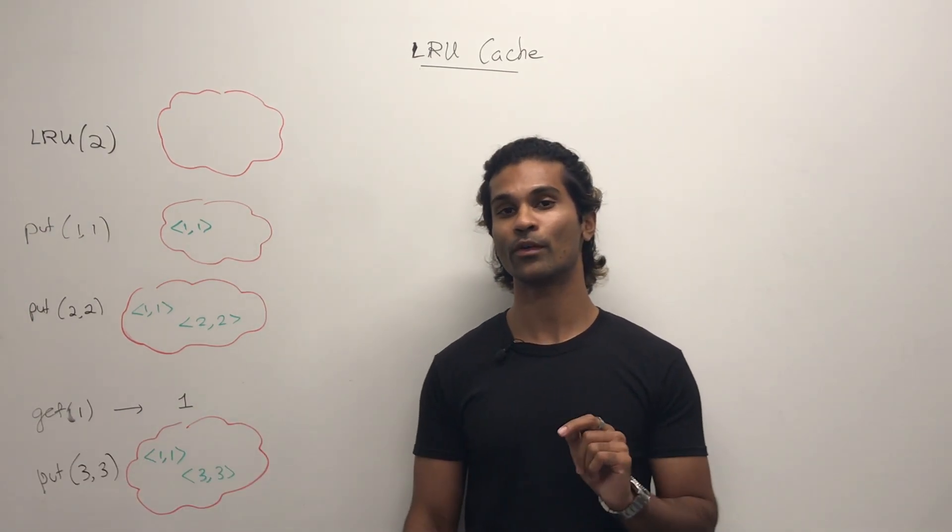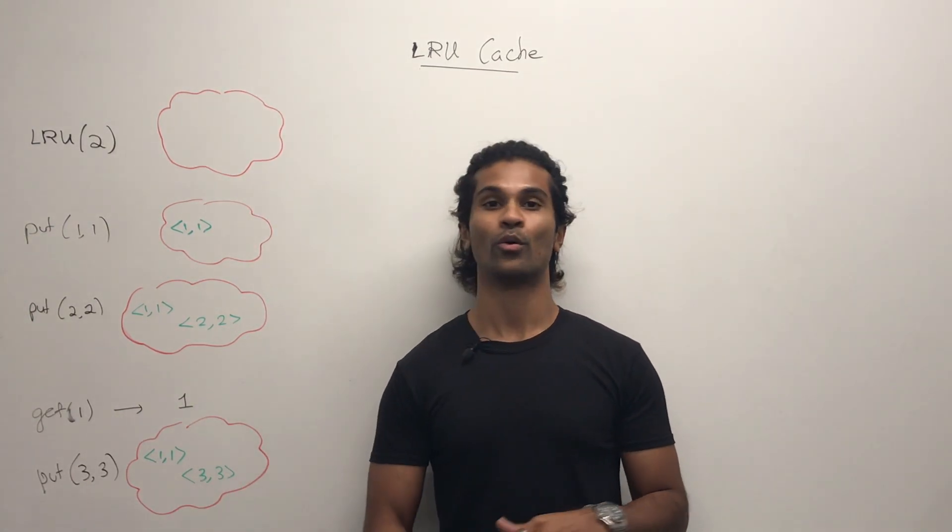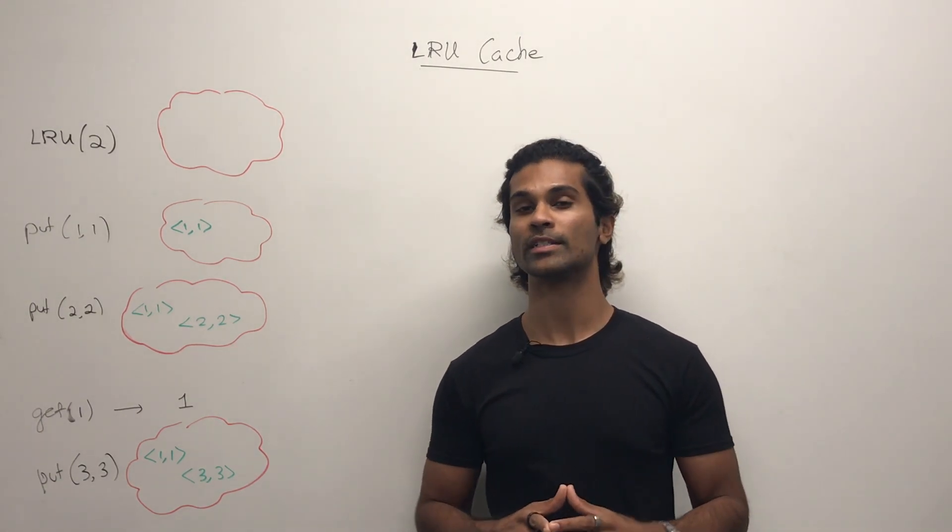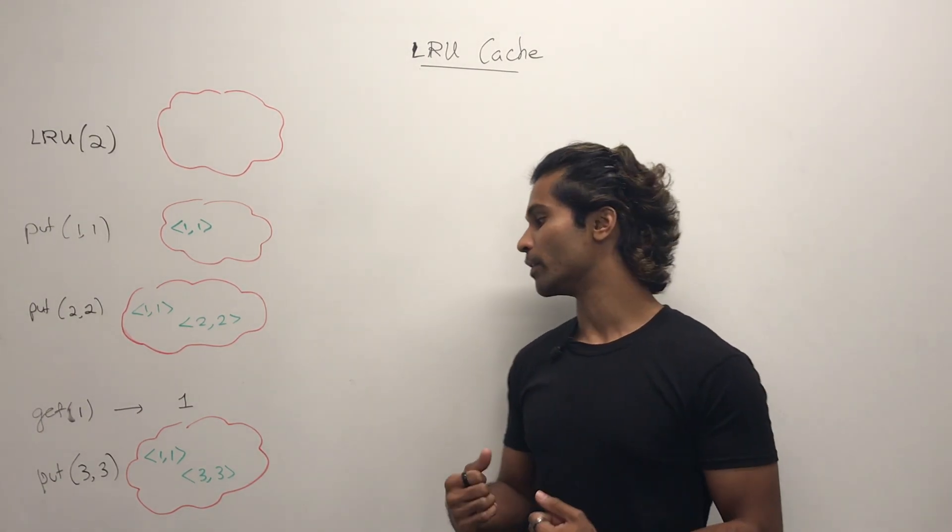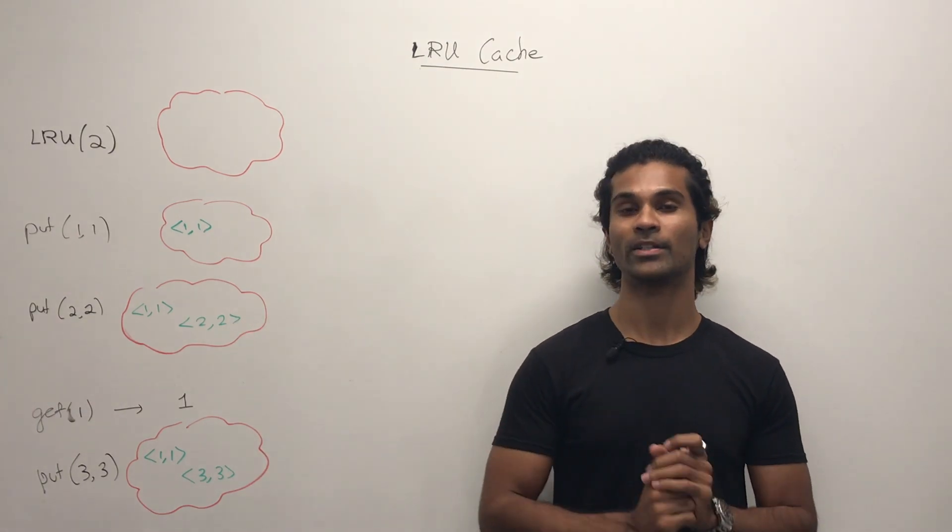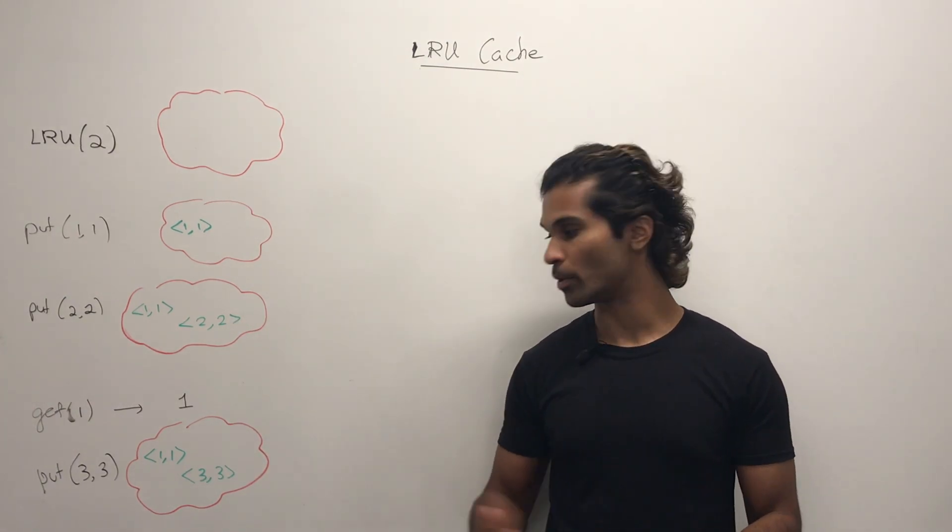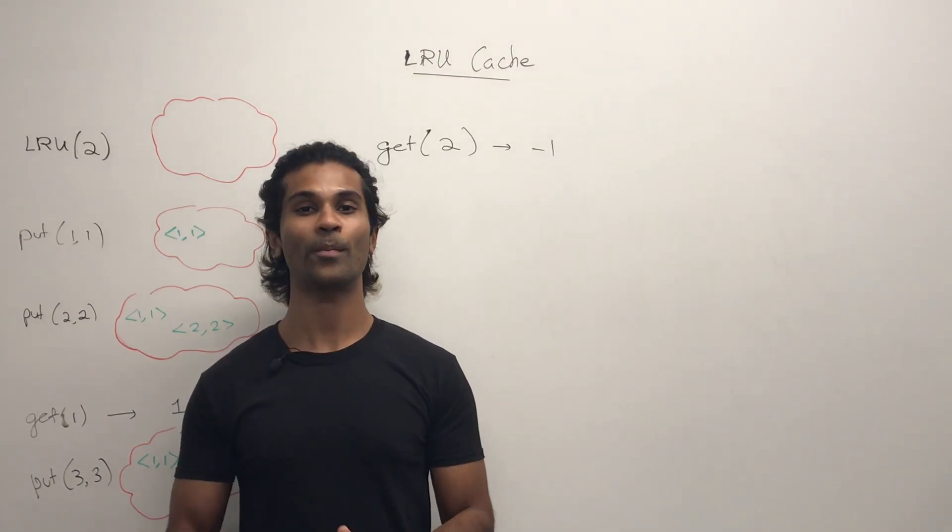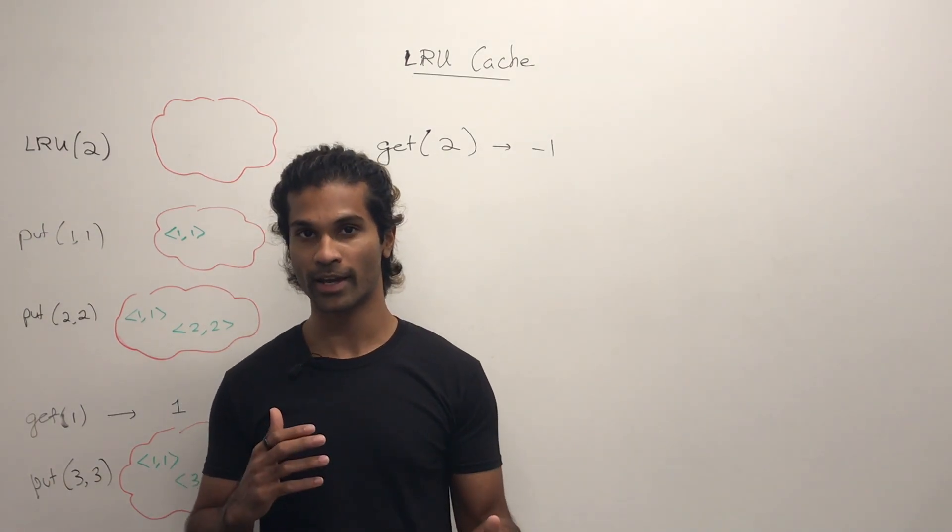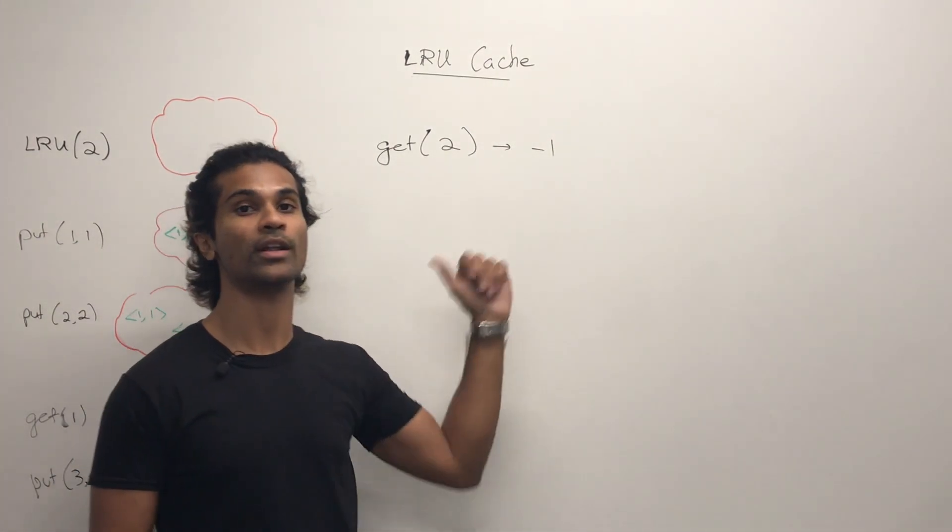Now I call put of 3,3. So we're going to add an entry, but our LRU cache is already size 2. That's why we evicted 2,2 because it was the least recently used. And we put 3,3 instead. What happens when I call an entry that's no longer in the cache? We simply return negative 1.